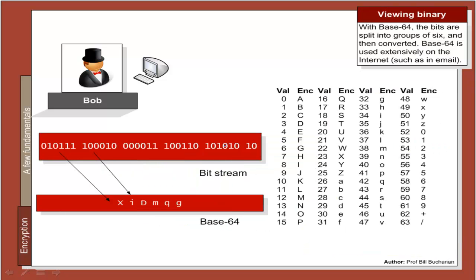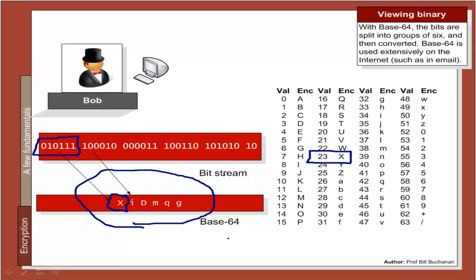The other way is base64, a standard way of representing binary in messages such as emails. With base64, we take six bits at a time and convert that into a character. The first 6-bit stream 0, 1, 0, 1, 1, 1 is equivalent to 1+2+4+16 = 23, and 23 represents an X. This is defined as base64 format and is a useful way for sending binary information over standard text-based protocols.